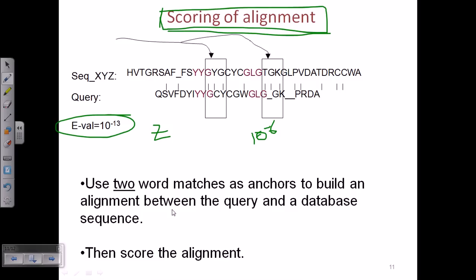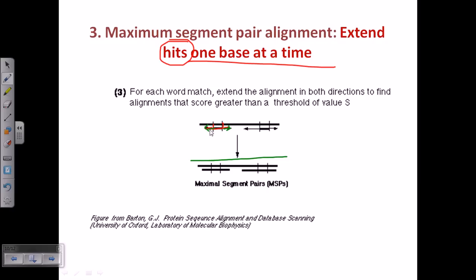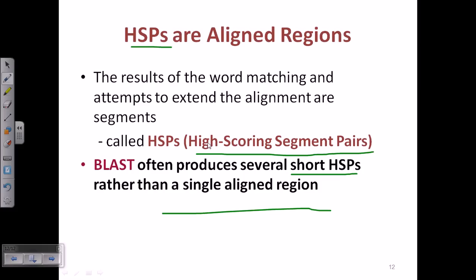HSPs — High Scoring Segment Pairs — are the result of the word matching and alignment extension. BLAST often produces several short HSPs rather than a single aligned region. Instead of long sequence alignments, it produces short segments with better matching, and the best-scoring matches are called High Scoring Segment Pairs. We take those pairs for our alignment purposes.